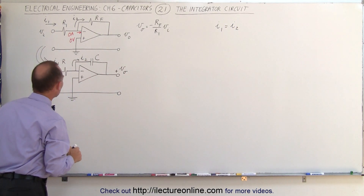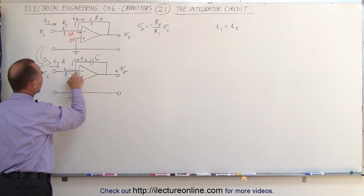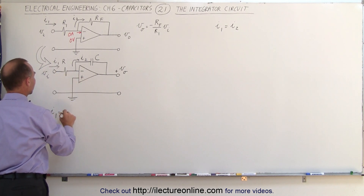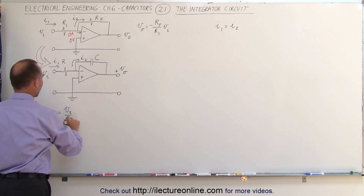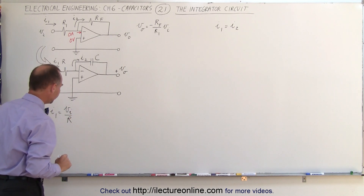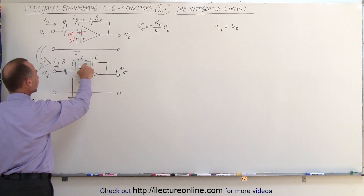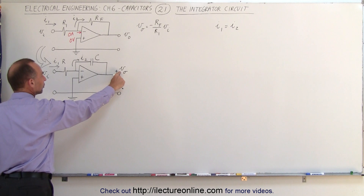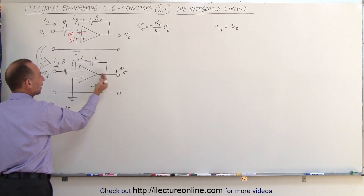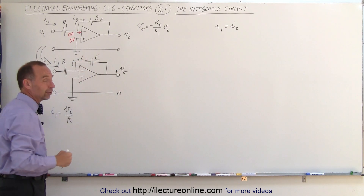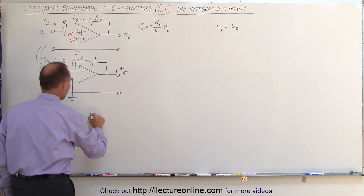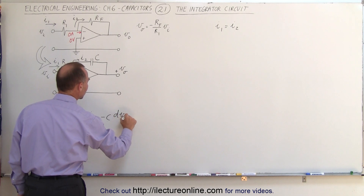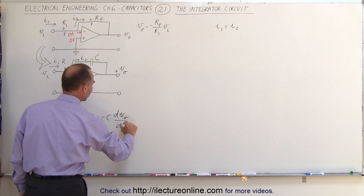Using Ohm's law, realizing that the inverting input must be at zero voltage, we can say that I1 must equal the ratio of the input voltage divided by the resistance. For the second current, notice that we assume a positive output voltage and zero at the inverting input, so the current flows in the opposite direction, which means I2 equals minus the capacitance times the rate of change of the output voltage with respect to time.